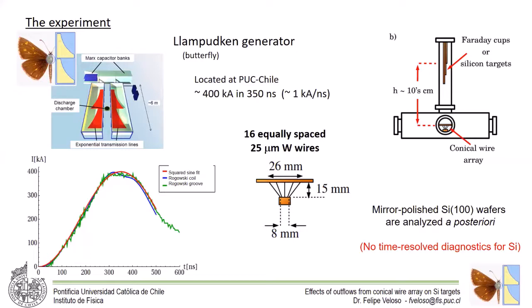The targets to irradiate we use 100 oriented silicon wafers in the position where the cups were previously located.